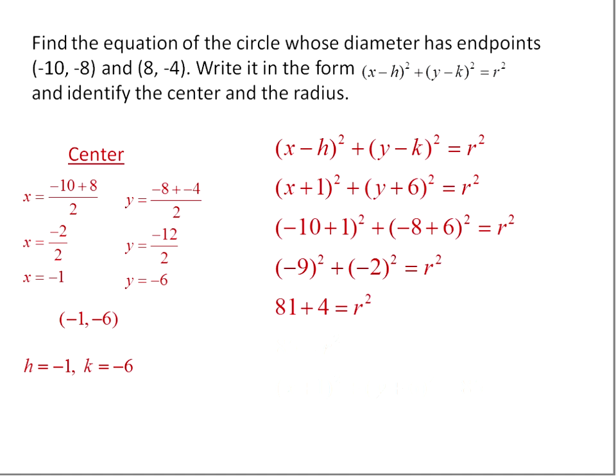Negative 9 squared is 81. Negative 2 squared is 4. And so we have r squared equals 85.